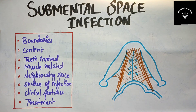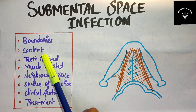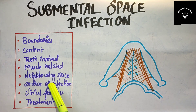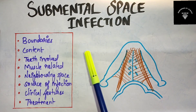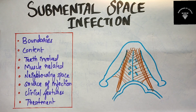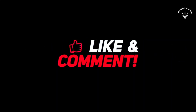Let's recall what we covered: boundaries, contents, teeth involved, muscle related, neighboring space, source of infection, clinical features, and treatment of submental space infection. It is a very simple and easy topic — just know the diagram properly. That's it for today's video. Thank you for watching; if you liked it, hit like, share, and subscribe.